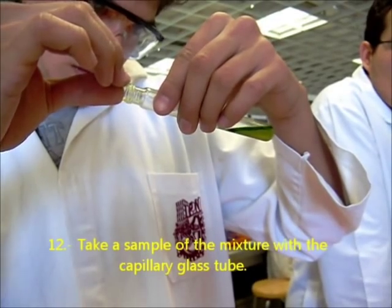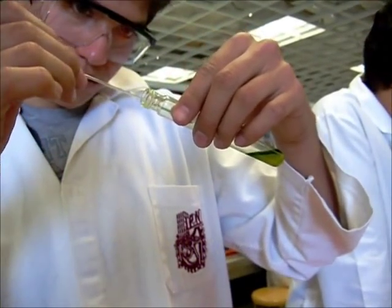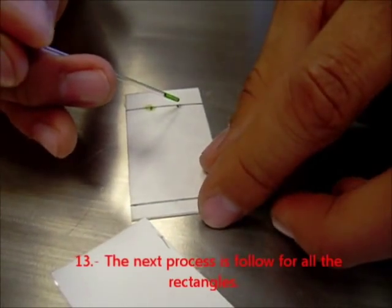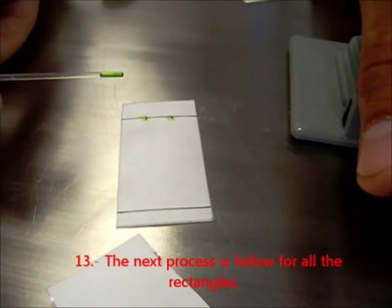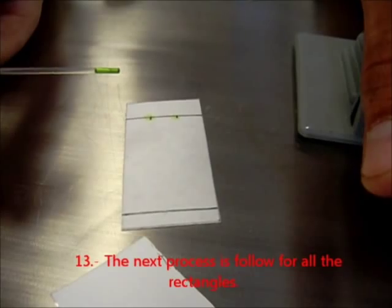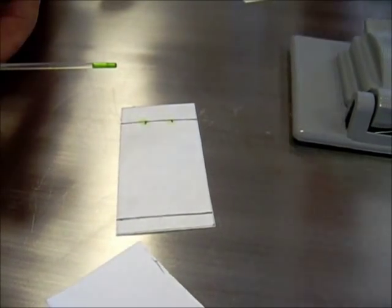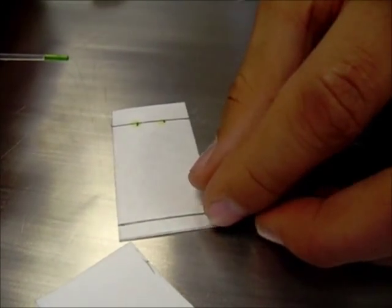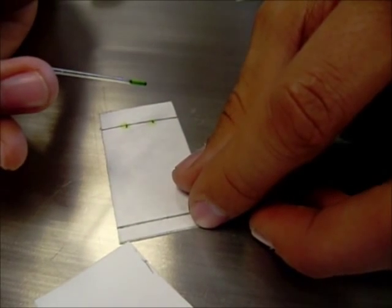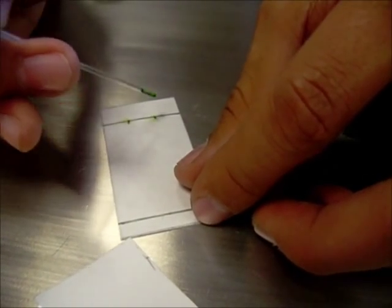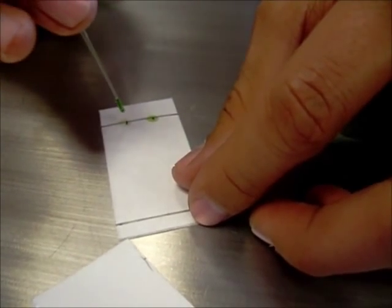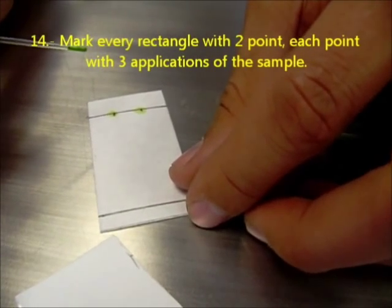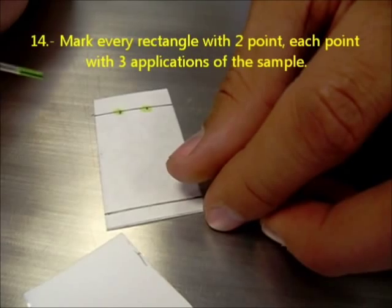Take a sample of the mixture with the capillary glass tube. The next process is followed for all the rectangles. Mark every rectangle with two points, each one with three applications of the sample.